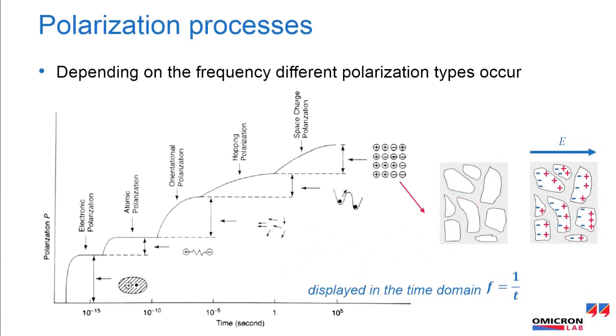Interfacial and space charge polarization. Different dielectric layers with different permittivities and conductivities in one material can lead to accumulations of the charge carriers at the interfaces of the dielectric layers.